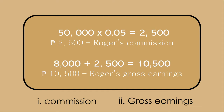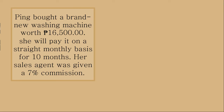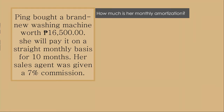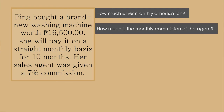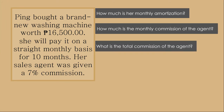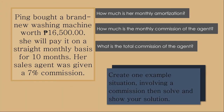Did you get the correct answers? Outstanding! Since you have answered the previous problems correctly, let's further evaluate your understanding of the lesson. Just comment your answers on this video. Ping bought a brand new washing machine worth 16,500 pesos. She will pay it on a straight monthly basis for 10 months, and her sales agent was given a 7% commission. Find: how much is her monthly amortization, how much is the monthly commission of the agent, and what is the total commission of the agent. Also, create one example situation involving a commission, then solve and show your solution.